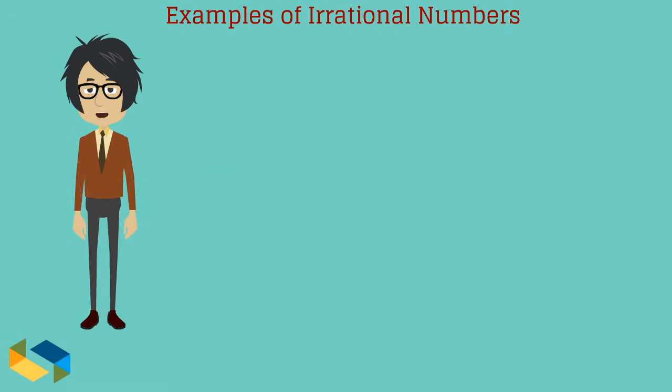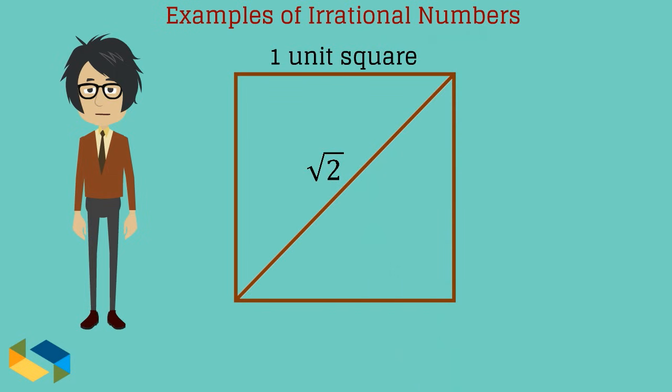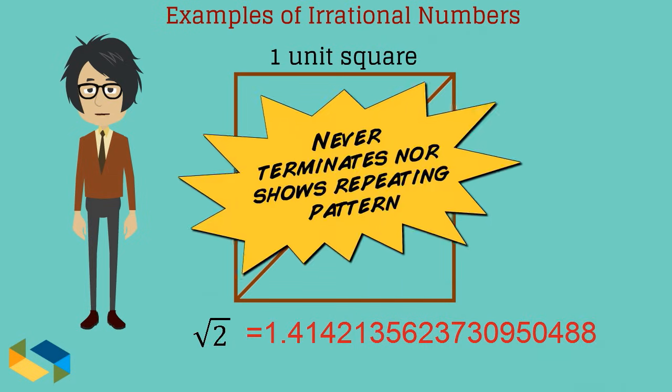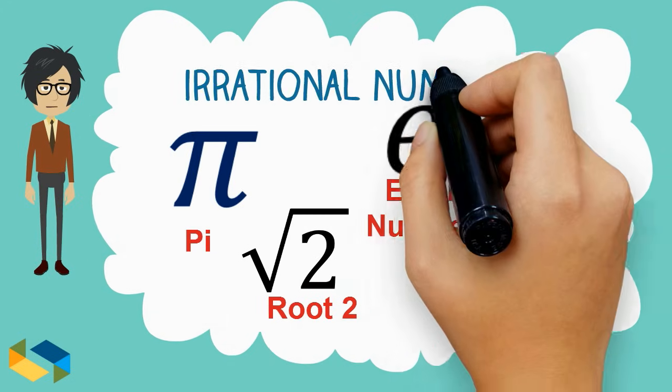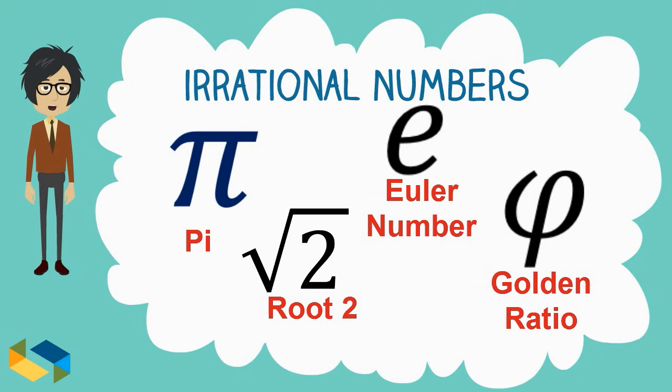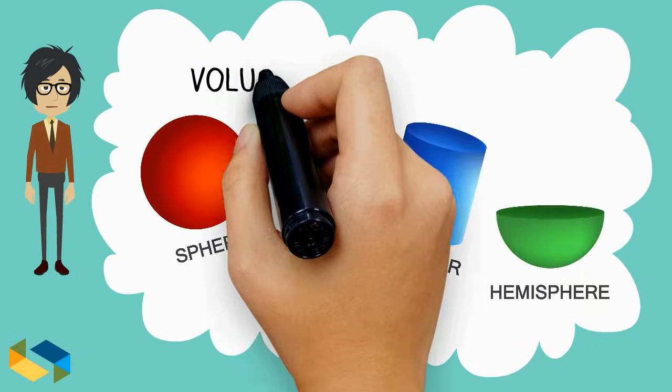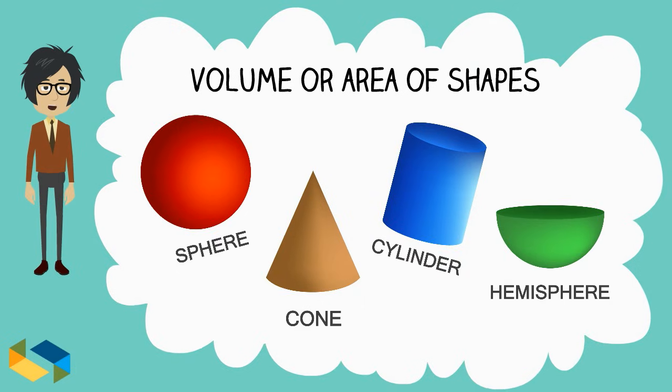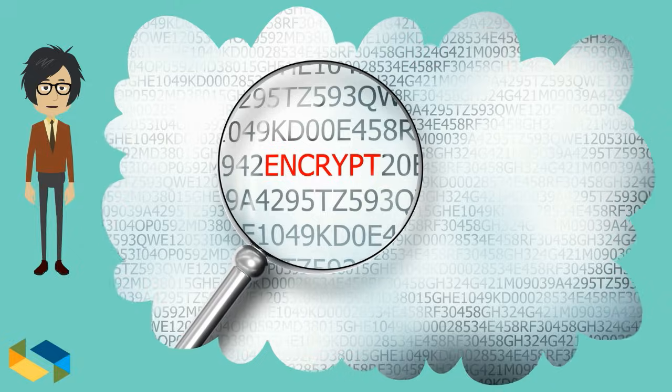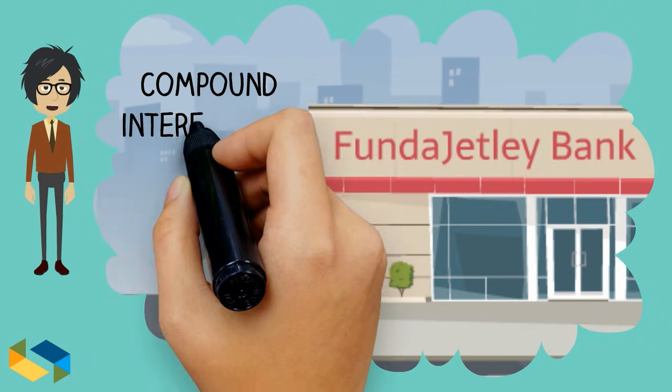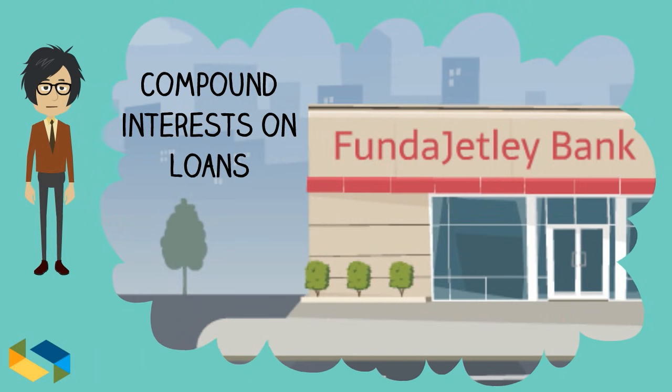Another example of irrational number is the square root of 2, which is the length of the diagonal of a square of size 1 unit. This number also does not terminate, nor do its decimals repeat a certain pattern. Numbers like these are irrational numbers, which have many applications in the real world. Examples being, calculating area or volume of shapes that involve a circle, encryption algorithms, deriving compound interests on loans by banks, etc.